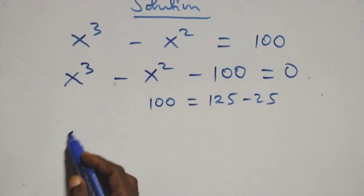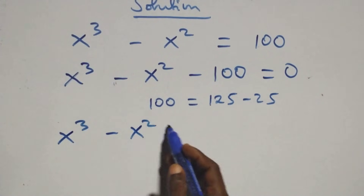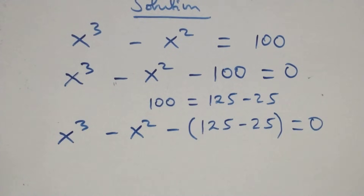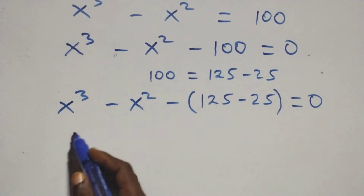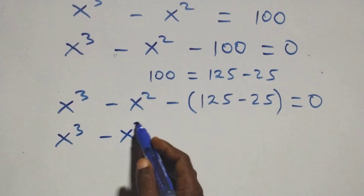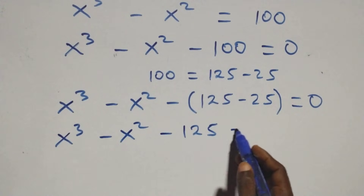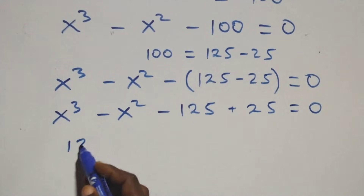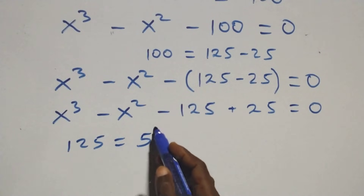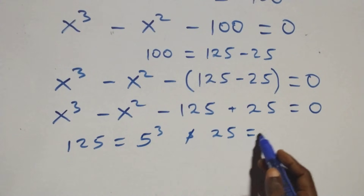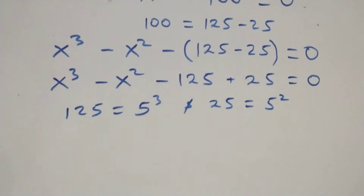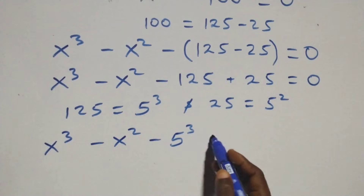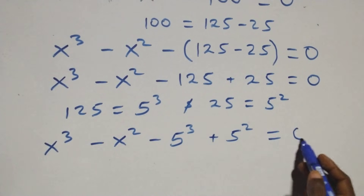From here, 100 can be expressed as 125 minus 25. So this equation becomes x raised to power 3 minus x raised to power 2 minus (125 minus 25) equals to 0. Opening the bracket, we have x raised to power 3 minus x raised to power 2 minus 125 plus 25 equals to 0. We can re-express 125 as 5 raised to power 3 and 25 as 5 raised to power 2. The equation becomes x raised to power 3 minus x raised to power 2 minus 5 raised to power 3 plus 5 raised to power 2 equals to 0.